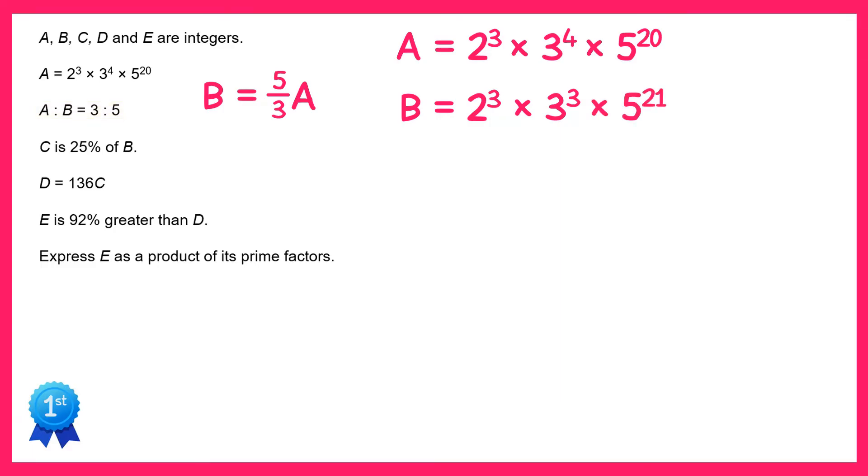Now we move on to the next part. We're told that C equals 25% of B, or C equals 1 quarter of B. So to find C I need to divide B by 4. Now 4 is equal to 2 squared, so to divide B by 4 I could just reduce the power of 2 down by 2. So I get C equals 2 to the power 1 times 3 cubed times 5 to the 21.